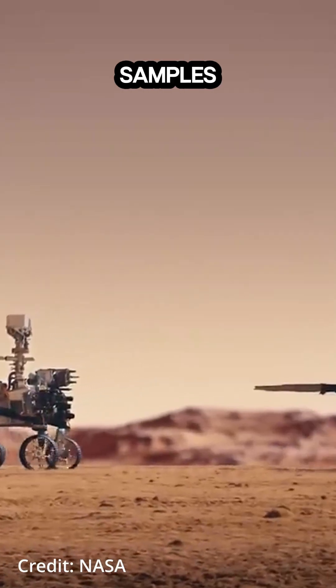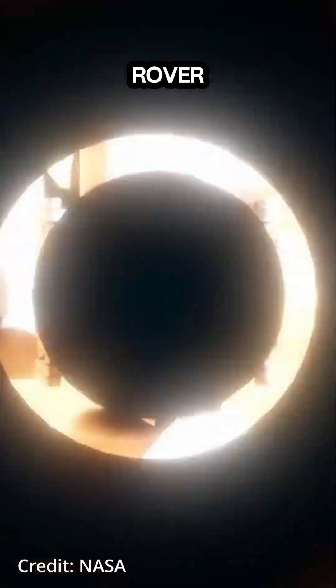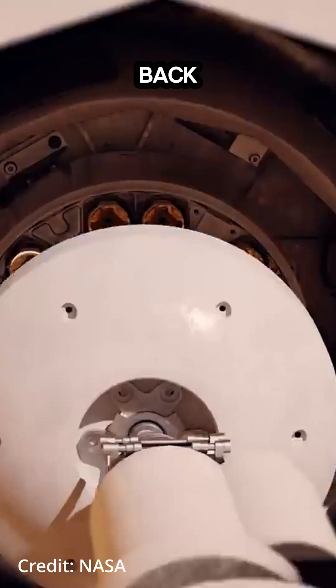NASA would send Perseverance to take samples and a launch system to get the samples to orbit. Europe would send a fetch rover and a satellite that would kick the whole thing back to Earth.